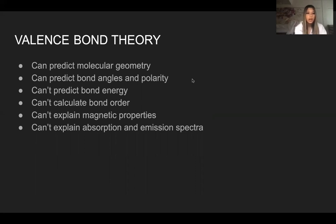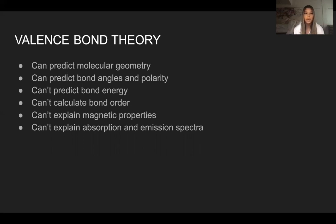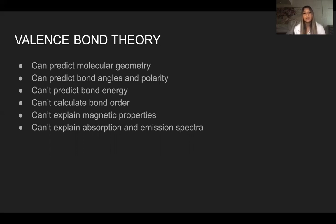With Valence-Bond Theory, it's good for some things but not for others. We can predict the molecular geometry of each molecule, bond angles, and polarity — these are possible by using VSEPR with the Lewis structure. However, it cannot predict bond energy, cannot calculate bond order, cannot explain magnetic properties such as diamagnetic and paramagnetic behavior, and cannot explain absorption and emission spectra.